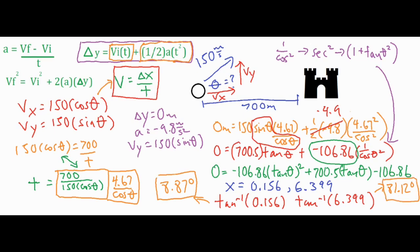We get two answers because complementary angles — two angles that sum to 90 degrees — always produce the same range for a projectile. 8.87 and 81.12 degrees add up to nearly 90 degrees, with minor rounding error. In summary, substitute for t and plug into the y formula, use trig identities to get tangent squared and tangent theta, apply the quadratic formula, then take inverse tangent to find both complementary launch angles.